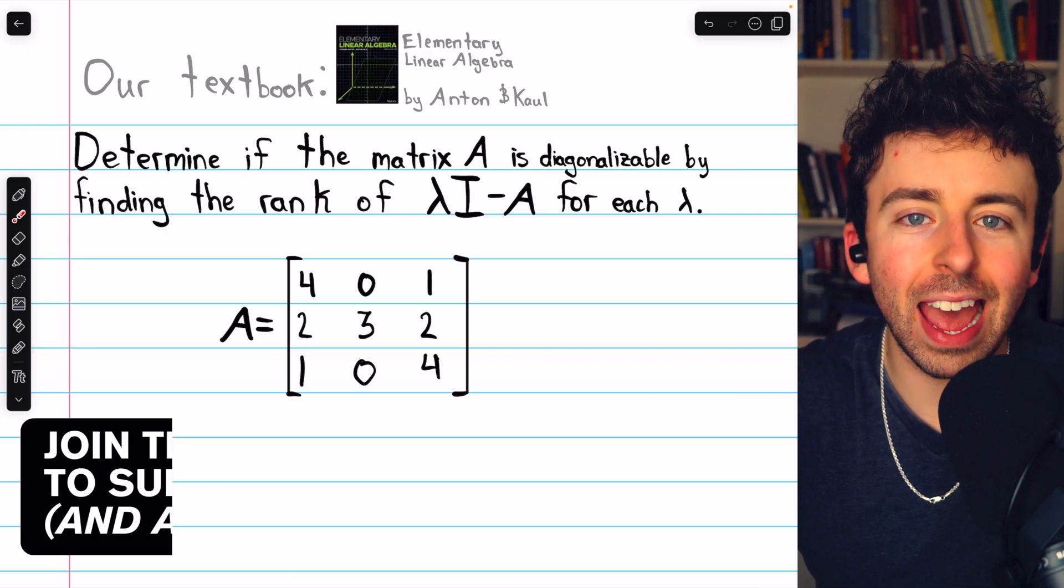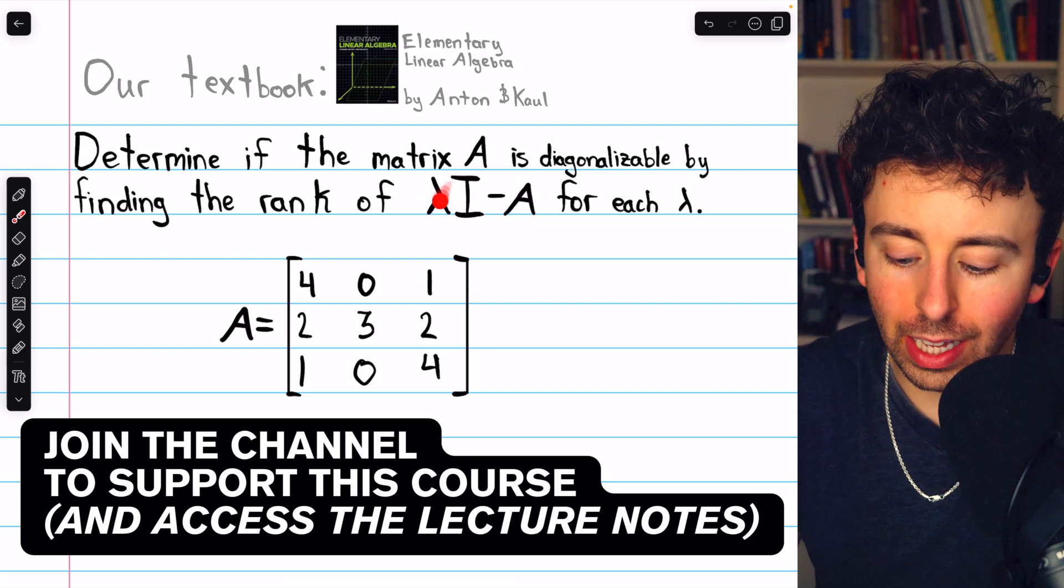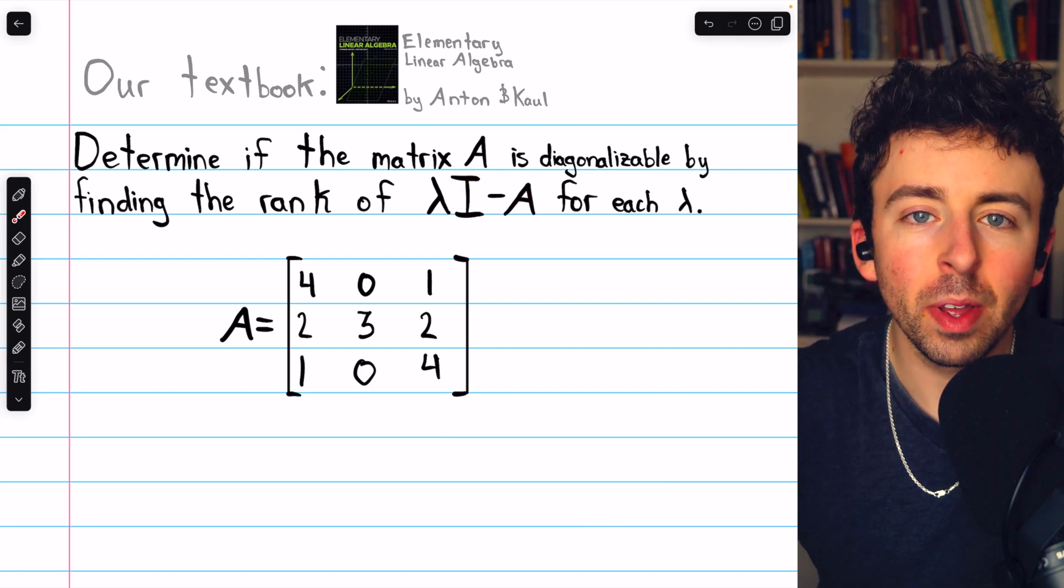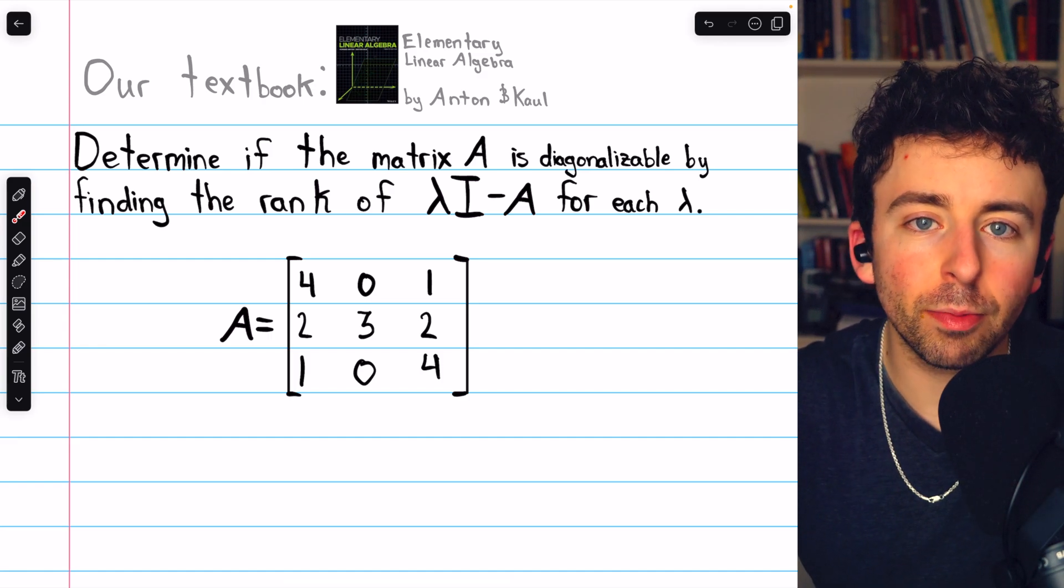One way to determine if a matrix A is diagonalizable is to find the rank of lambda I minus A for each eigenvalue. This will allow us to easily determine the dimensions of the eigenspaces.